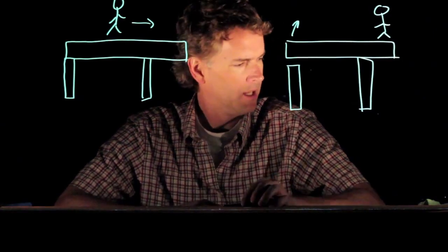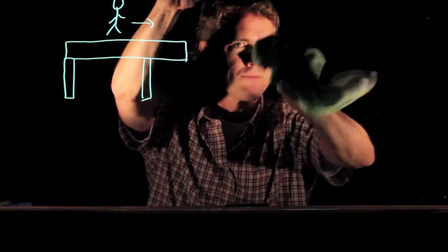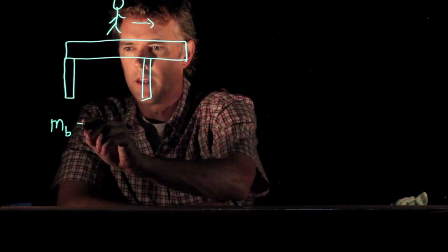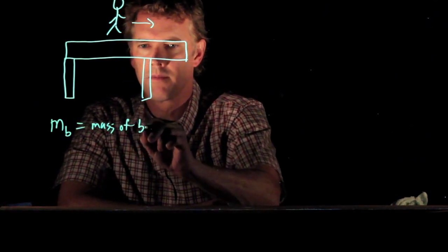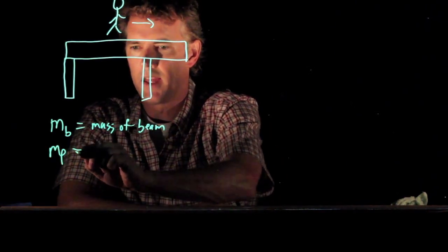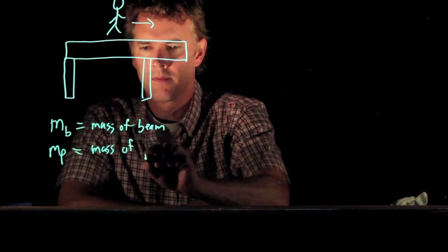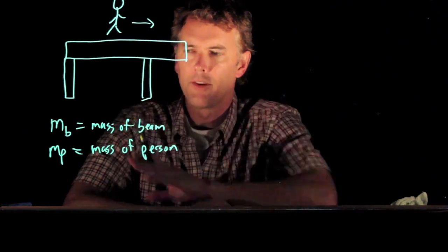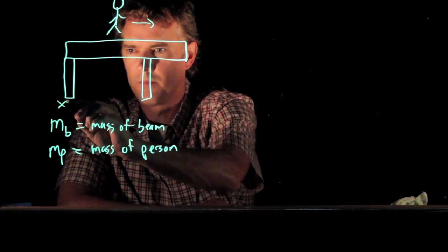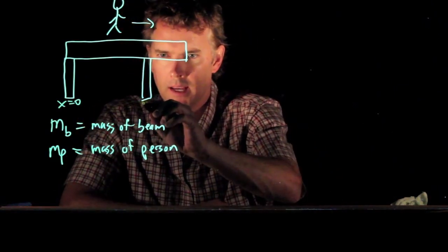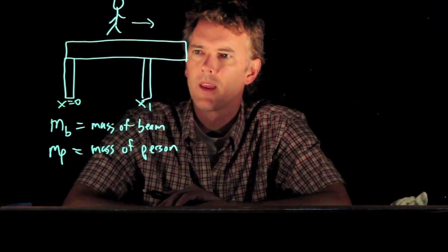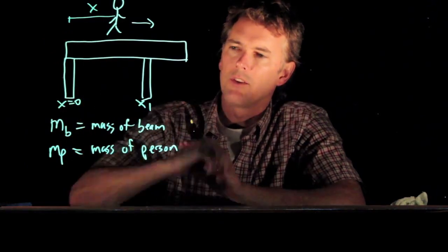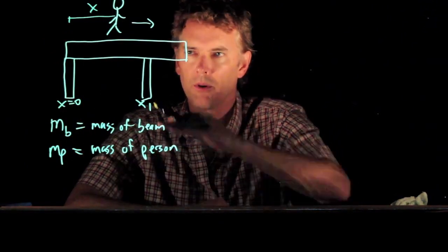So to visualize this let's give some parameters first off. Let's say that the mass of the beam is m sub b. The mass of the person is m sub p. And we'll give some distances. So let's let the left side of our beam be at x equals zero. We'll say that this position right here is x1. And this position of the person is x. So as x increases eventually we'll get to a point of unstable equilibrium and the thing will tip.